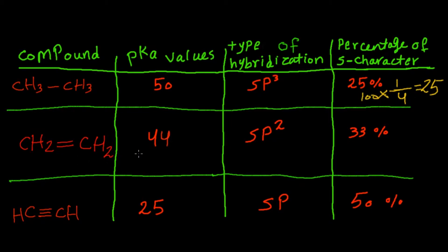In ethene here the type of hybridization is sp2 and the percentage of s orbital character we can calculate as one s orbital over one s orbital plus two p orbitals, so three orbitals multiplied by 100. So we get this percentage which is 33%.